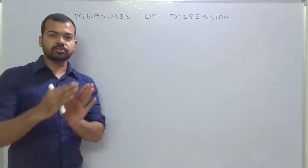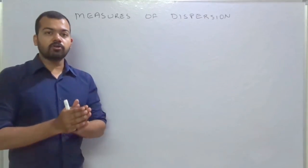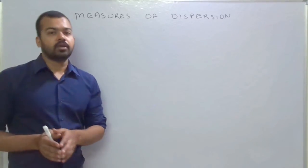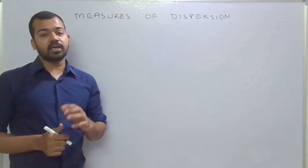Dispersion means how skewed your series is from the value of mean, median, or mode. So we calculate dispersion with the help of five methods.